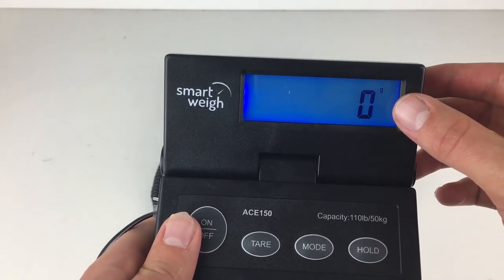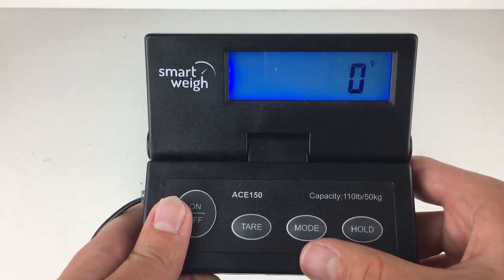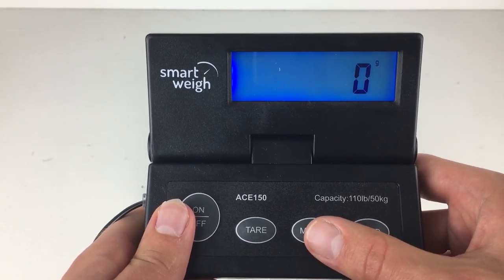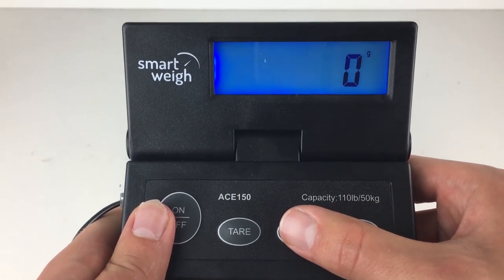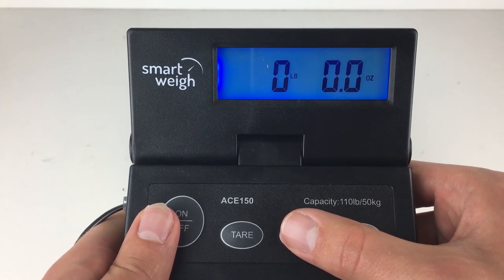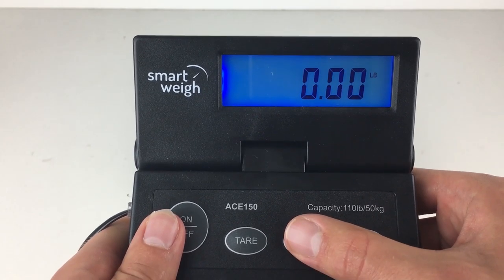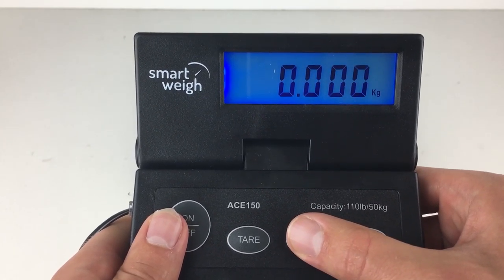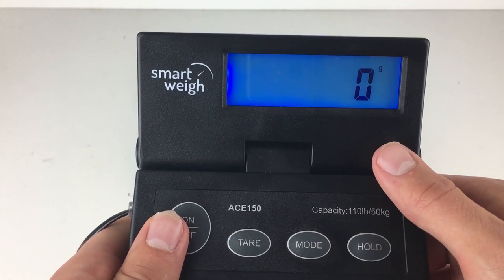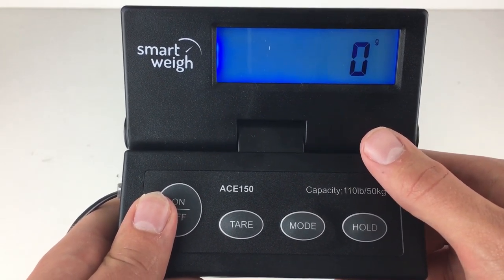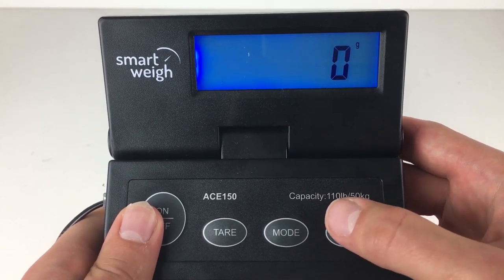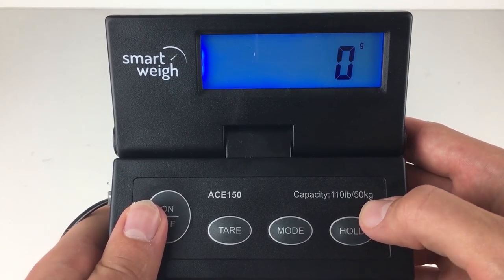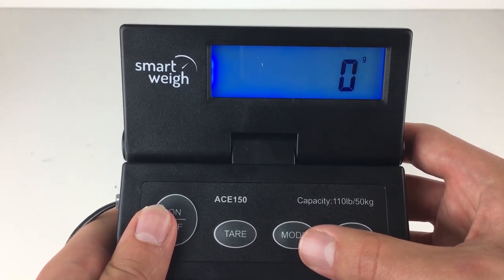The default might be different, it might be kilograms, but don't worry it's very easy to change the setting. So I've got this mode button here, again that's just to change the setting. So it goes from grams here to pounds and ounces, to pounds, to kilograms, and then back to grams again. So a nice little range of items there, a nice range of functions, and you see it just gives us a reminder of the capacity there - 110 pounds or 50 kilograms. So essentially that's the mode there.